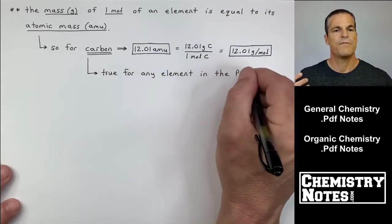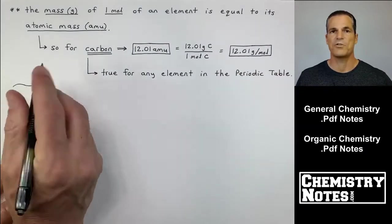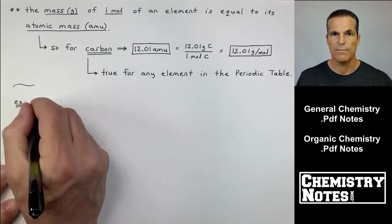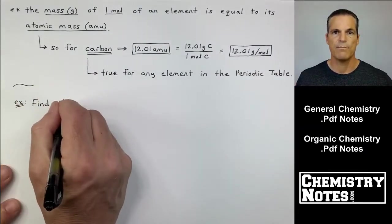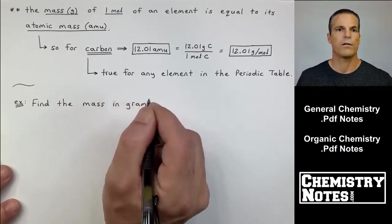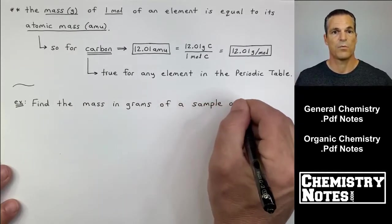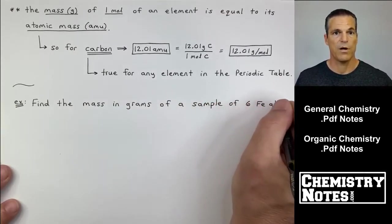In other words, the shortcut is this. If you see something that says 12.01 AMU or for nitrogen, 14.01 AMU, you can replace the AMU with grams per mole. It's much more useful. Rarely do you see AMU except when we first introduced this stuff. So we're going to go with grams per mole from now on.